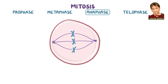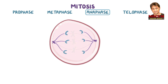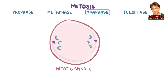Next, during anaphase, the centrosomes start pulling on the spindle fibers to pull the sister chromatids apart, forming the mitotic spindle. It looks kind of like a fishing line being cast out to its target, and then the line gets reeled in, pulling the kinetochore and its attached sister chromatid away from its partner chromosome.